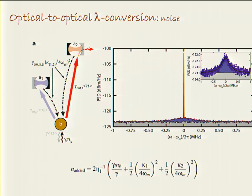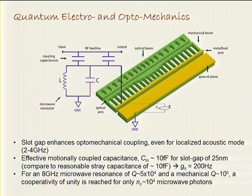The noise performance shows only about three thermal quanta remaining in the system due to laser cooling by the control beams, and the quantum noise introduced is less than 0.2%. So we can convert between 1400 nm and 1500 nm photons using these little mechanical systems with near-quantum-limited performance already.